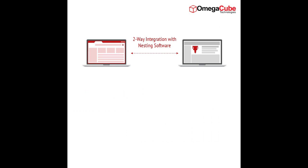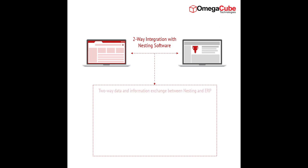Omega QBRP and nesting applications can automatically share data with each other. With the elimination of manual work order updates, BOM updates, and manual preparation of nesting layout, you can see considerable reduction in overall production time and labor hours.